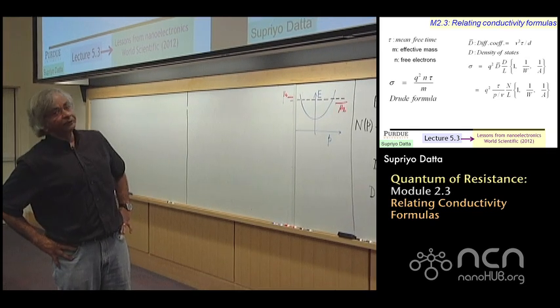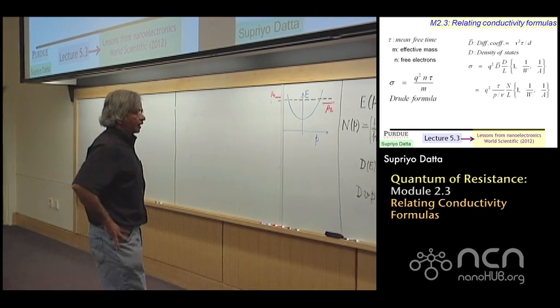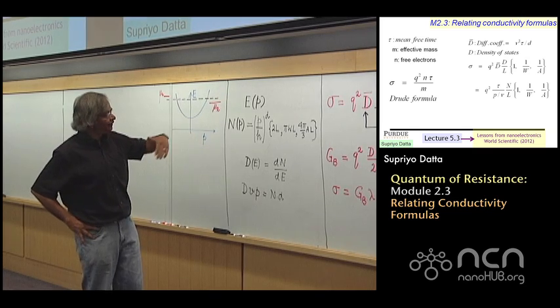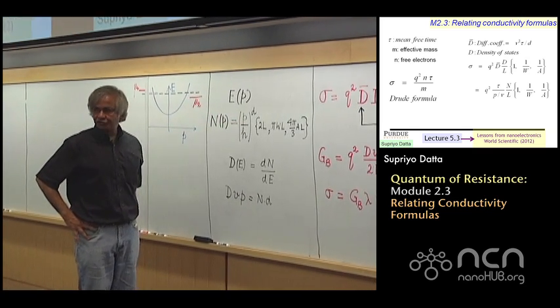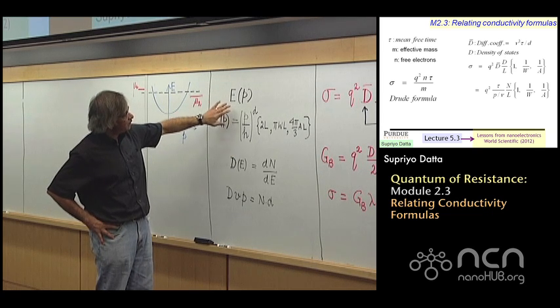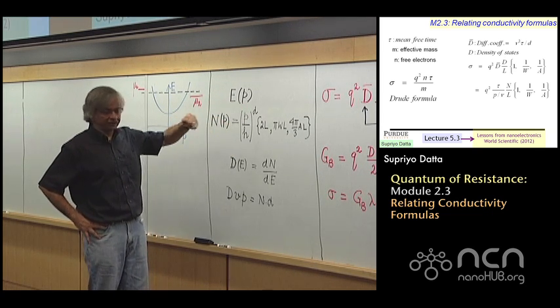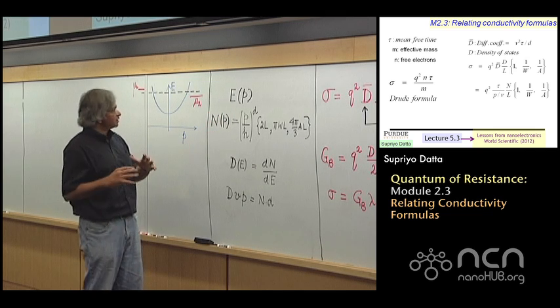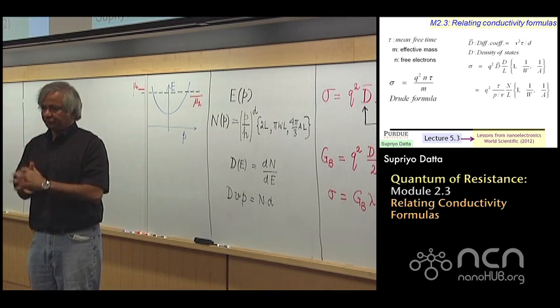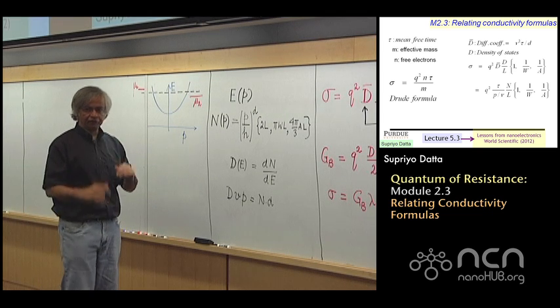Welcome to module 2.3. Just to remind you what we did in the last two modules this week, we introduced this model starting from an energy-momentum relation. In the last module we used this idea that electron is a wave with a certain de Broglie wavelength which has to fit into a box.